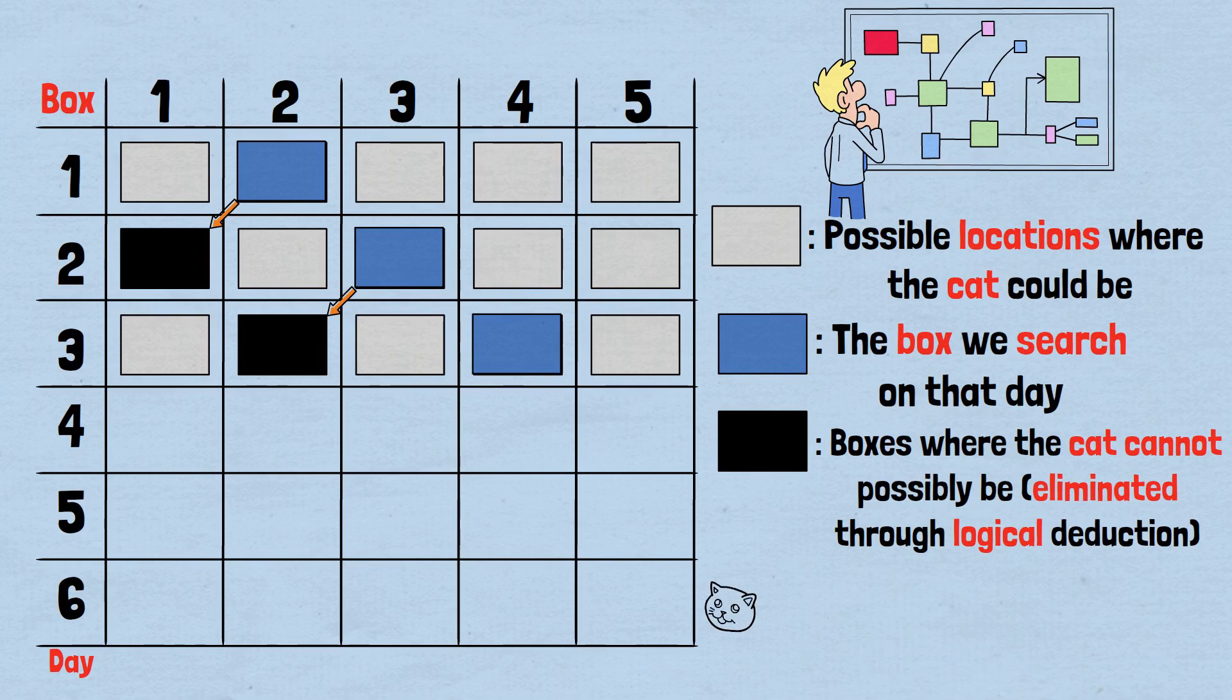After day 3: If we haven't found the cat by now, we can make a powerful deduction. The cat must have started in an odd-numbered box, 1, 3, or 5. This means that after 3 full days of movement, the cat is now guaranteed to be in an even-numbered position.